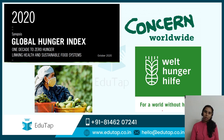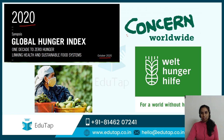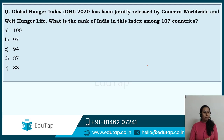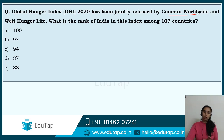Let's get started with the Global Hunger Index 2020. It has been released in October and two bodies — Concern Worldwide and Welthungerhilfe — have released this report. A typical question which can be asked in phase 1 or even phase 2 of the exams is: the Global Hunger Index 2020 has been jointly released by Concern Worldwide and Welthungerhilfe.